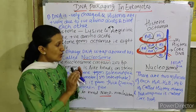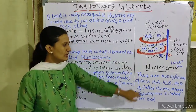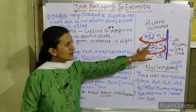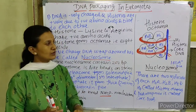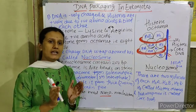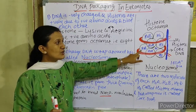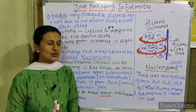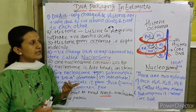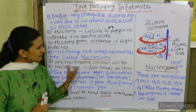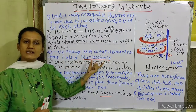Core DNA plus the histone octamer forms the nucleosome structure. The histone octamer is made of two molecules of each: H2A×2, H2B×2, H3×2, and H4×2 — forming the histone octamer. DNA wrapped around that histone is called core DNA. Histone octamer plus core DNA is called the nucleosome. The nucleosome has a 10 nanometer breadth and 100 angstrom unit diameter. The negatively charged DNA wrapped around the positively charged histone collectively forms the nucleosome.